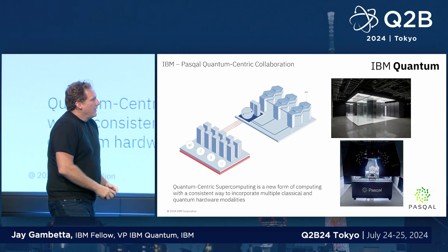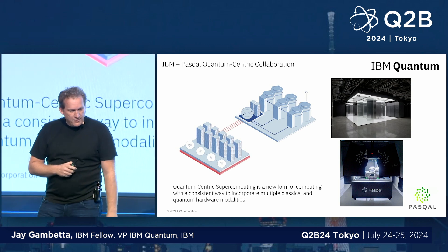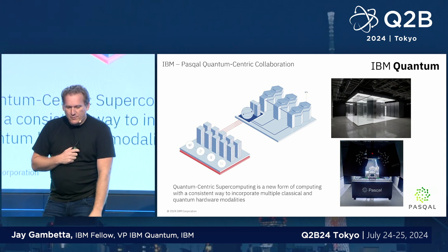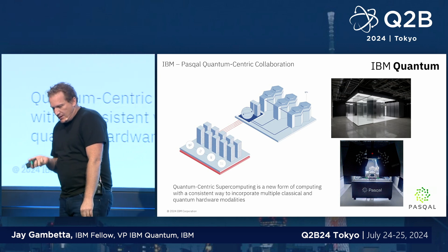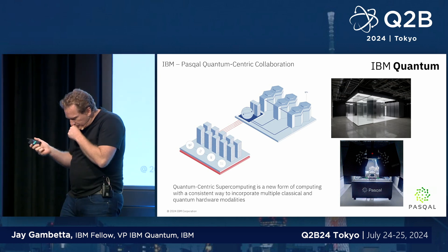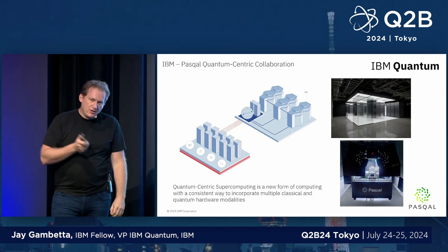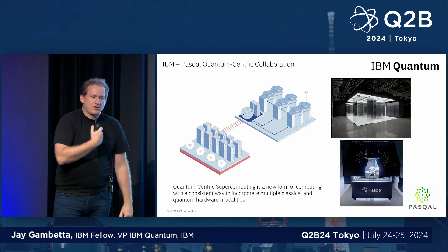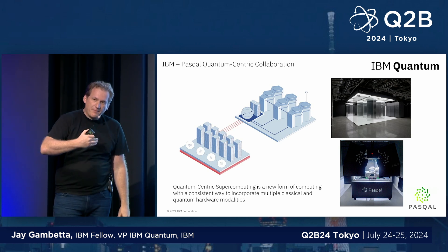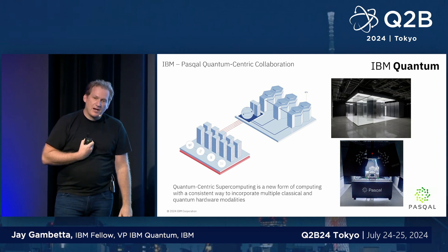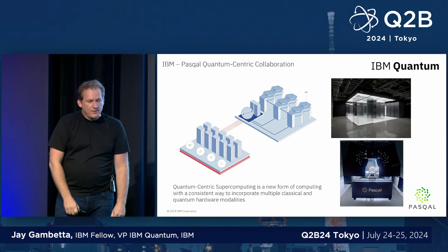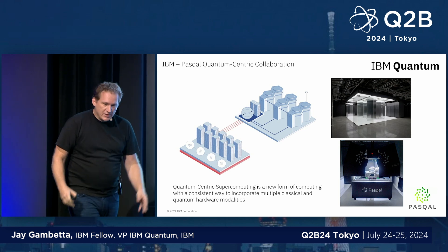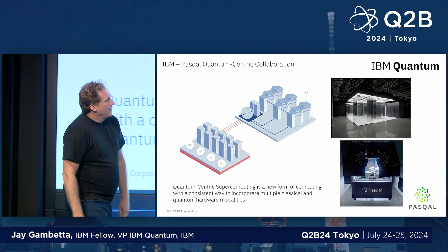So in my view, we're close to getting to quantum advantage. I think it's going to be a combination of two things: the creation of IP through novel ways of doing mapping, optimization, error suppression, and error correction, as well as bringing classical and quantum computers together — combined with how we're progressing on the hardware roadmap. I do think quantum advantage will be achieved in the next few years. Thank you.